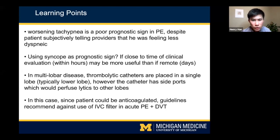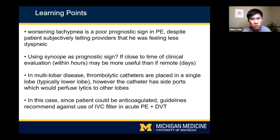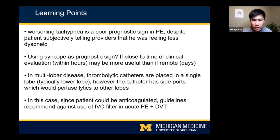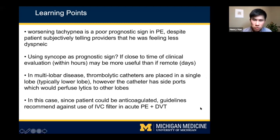A learning point between Nabil and me: in multilobar disease, thrombolytic catheters are something you can use. Placing them in a single lobe — typically a lower lobe — still provides therapeutic effect from the lytics, because other lobes do get perfused. In this case, since the patient could be anticoagulated per guidelines, we opted not to place an IVC filter.